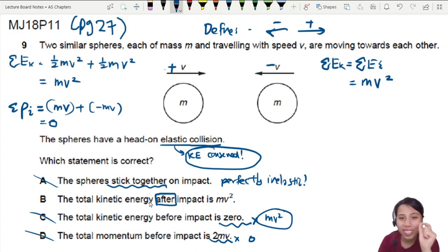Hence, because it's an elastic collision, you can say, all right, elastic means nobody lost any kinetic energy. We got mv squared and mv squared before and after. That's how we know the answer is B.